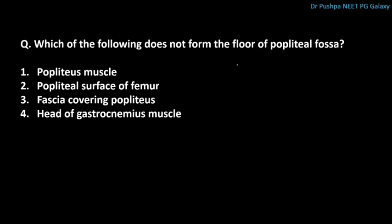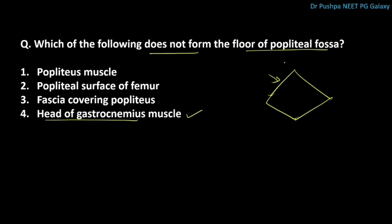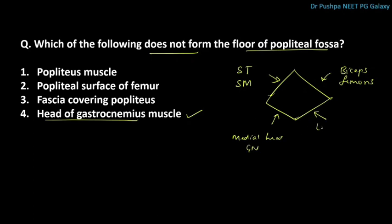Which of the following does not form the floor of the popliteal fossa? The correct answer is the head of gastrocnemius muscle, which forms the boundary, not the floor. Superomedially it is formed by semitendinosus and semimembranosus, superolaterally by biceps femoris, inferomedially by the medial head of gastrocnemius, and inferolaterally by the lateral head of gastrocnemius.